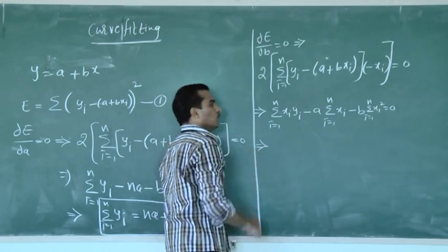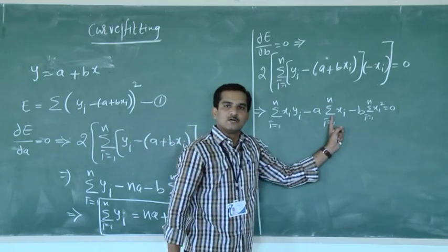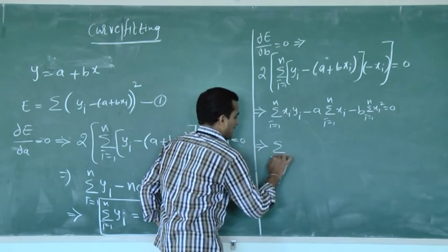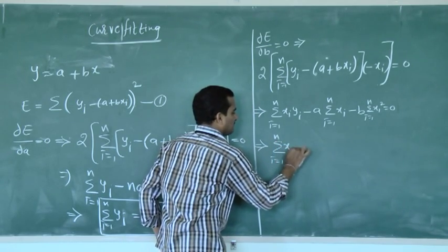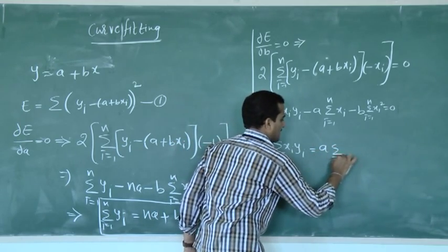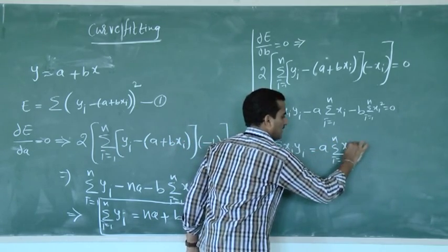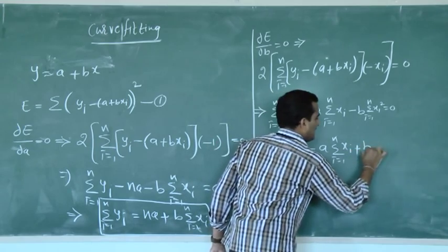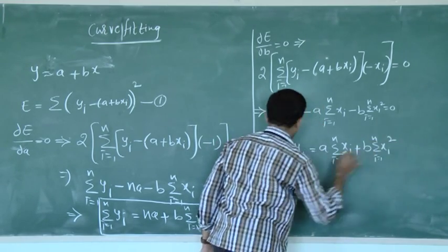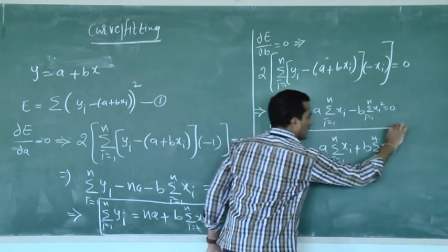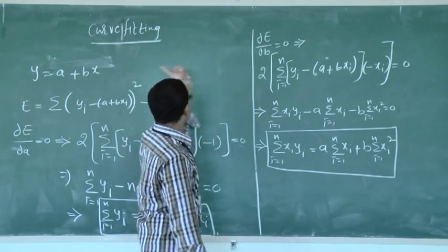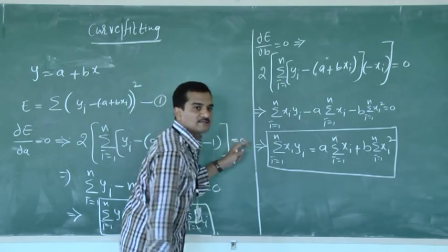Transposing the constant terms to the right-hand side: Σ(xi·yi) = A·Σxi + B·Σxi² (for i = 1 to n). This is the second normal equation to the straight line Y = A + BX.